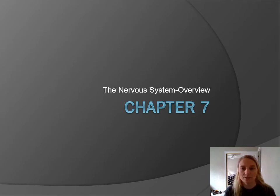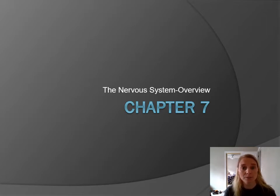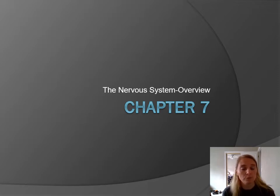Welcome to the first video in our Chapter 7 series. This is a pretty long chapter, so I'm going to break it up into six smaller sections with nice breaks so you can do these little chunks of information at a time. In this first video, it's just going to be an overview, an introduction to the nervous system, its component parts, how it is structurally classified, how it is functionally classified, and then we're going to take a look at what we call supporting cells before we move on into focusing on the neurons, which are the major cells of your nervous system.